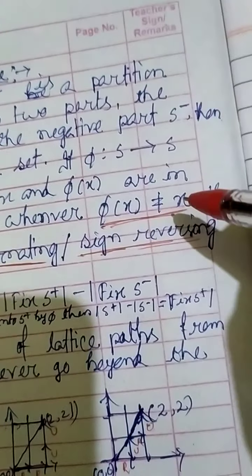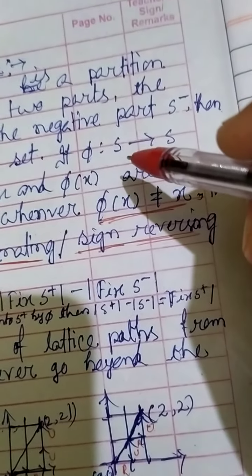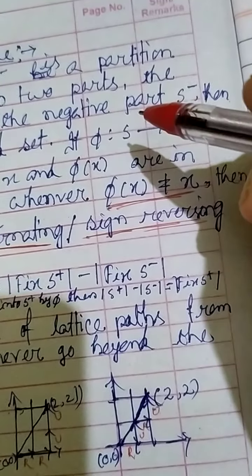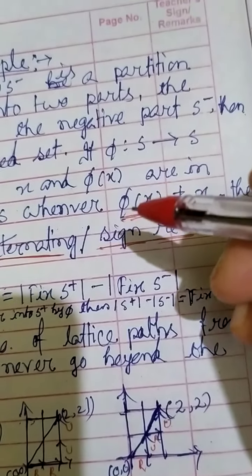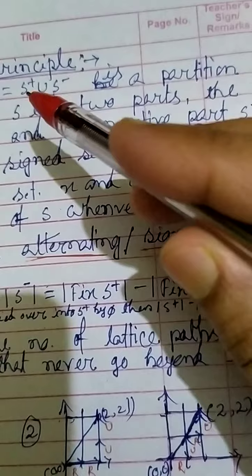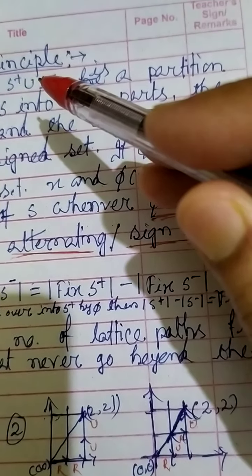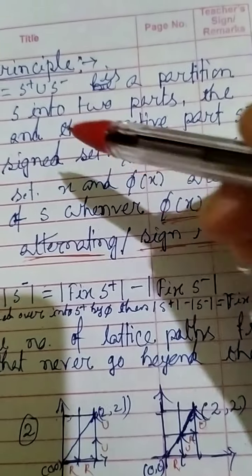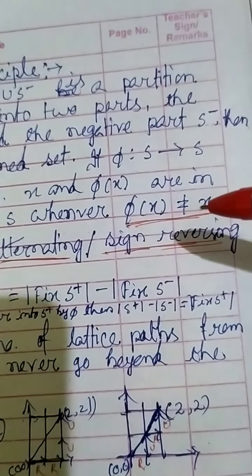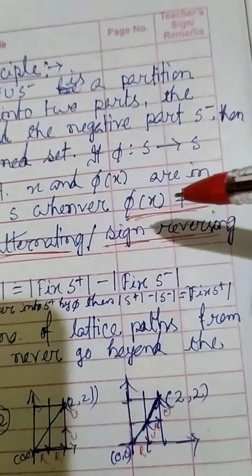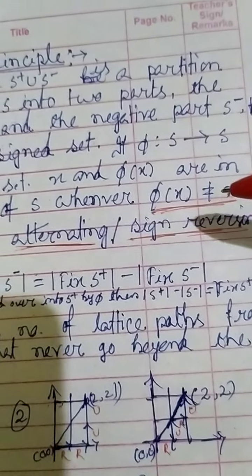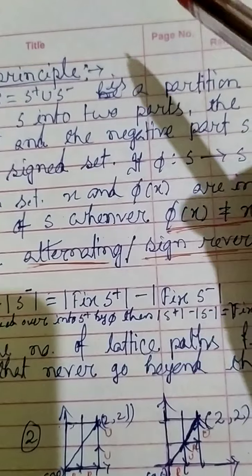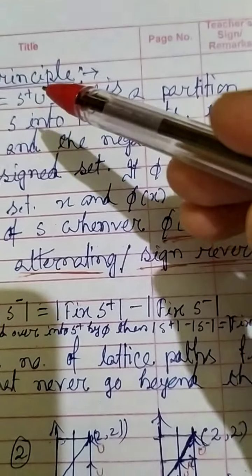That is, if φ(x) ≠ x, then x and φ(x) are in different parts of S: if x belongs to S-positive then φ(x) belongs to S-negative, or if x belongs to S-negative then φ(x) belongs to S-positive. If φ(x) equals x, then φ(x) and x belong to the same part.